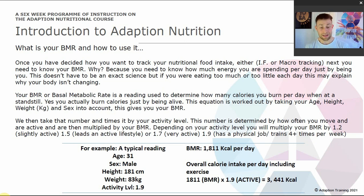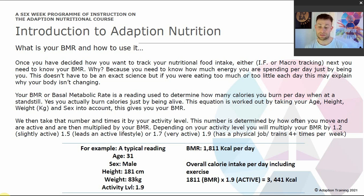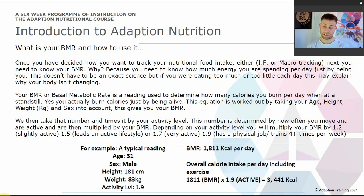We then take that BMR number and multiply it by your activity level. This number is determined by how often you move and how active you are. Depending on your activity level, you multiply your BMR by either 1.2 — slightly active; 1.5 — an active lifestyle; 1.7 — very active; or 1.9 — a physical job plus training four to five times per week.